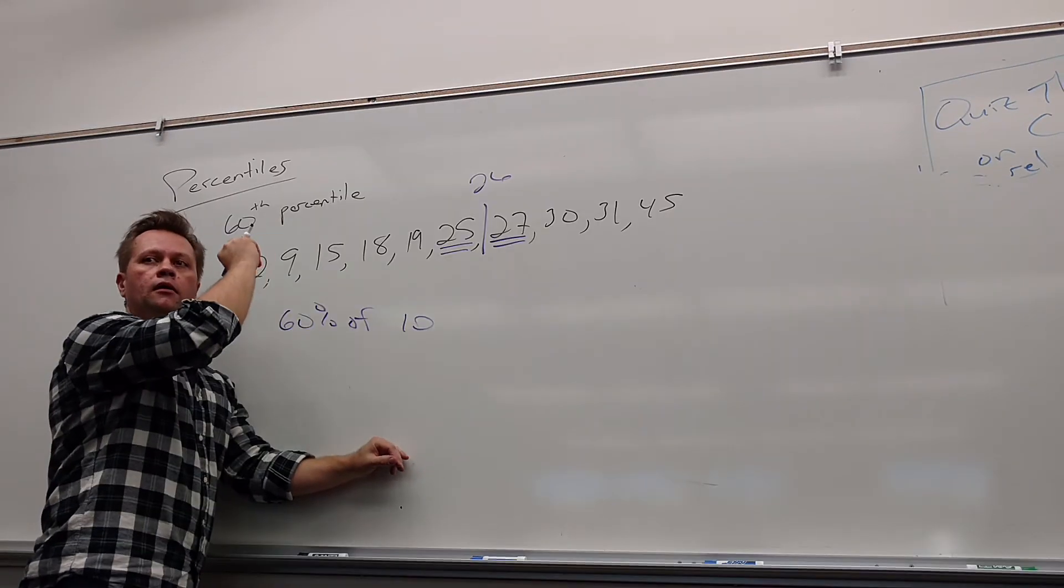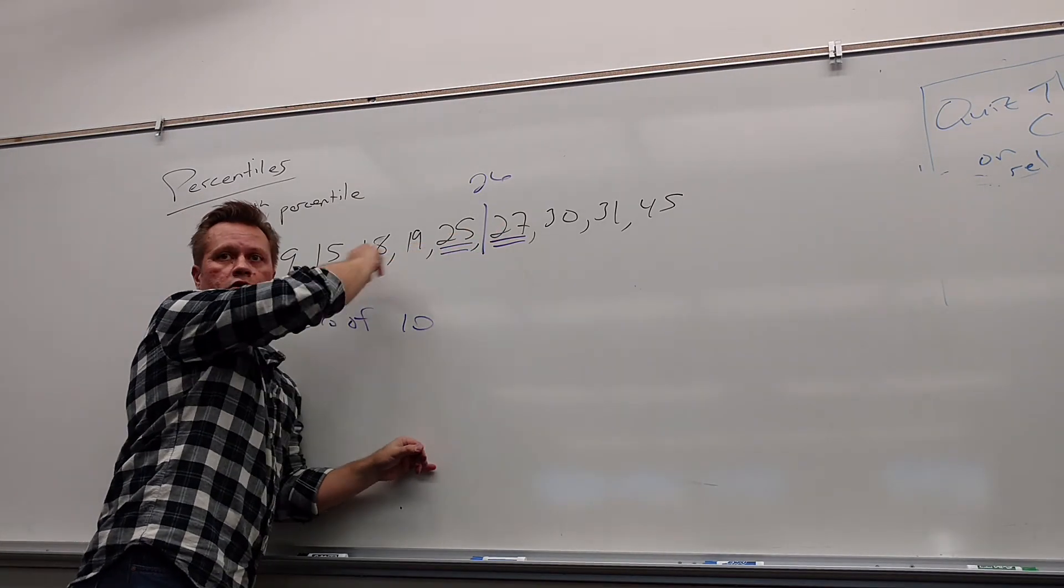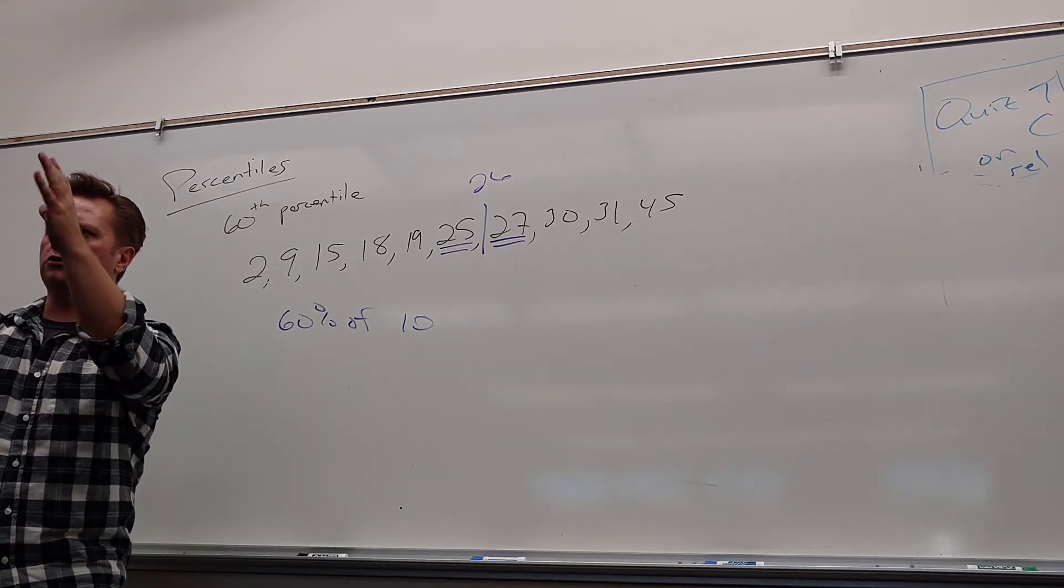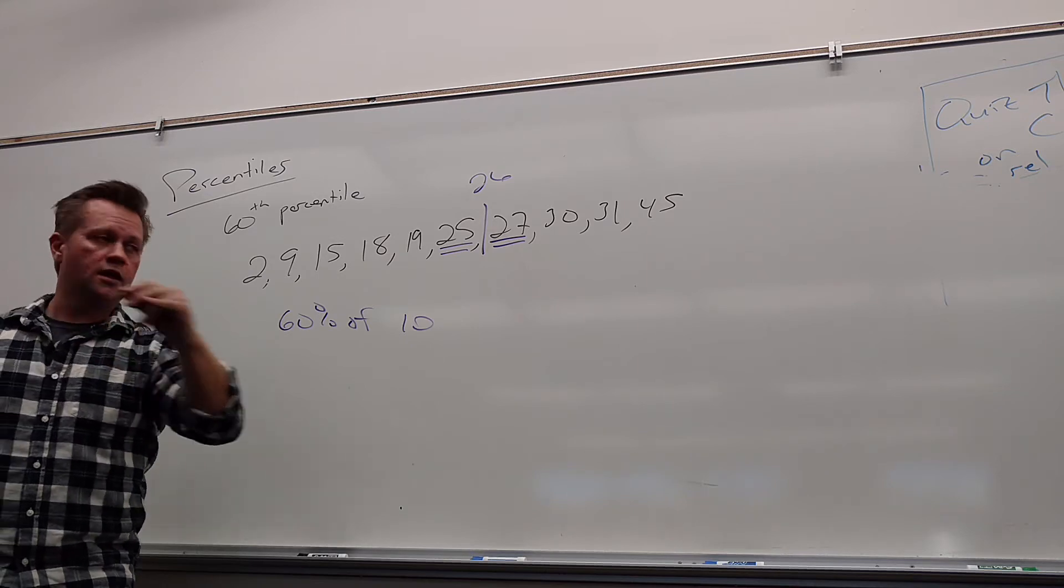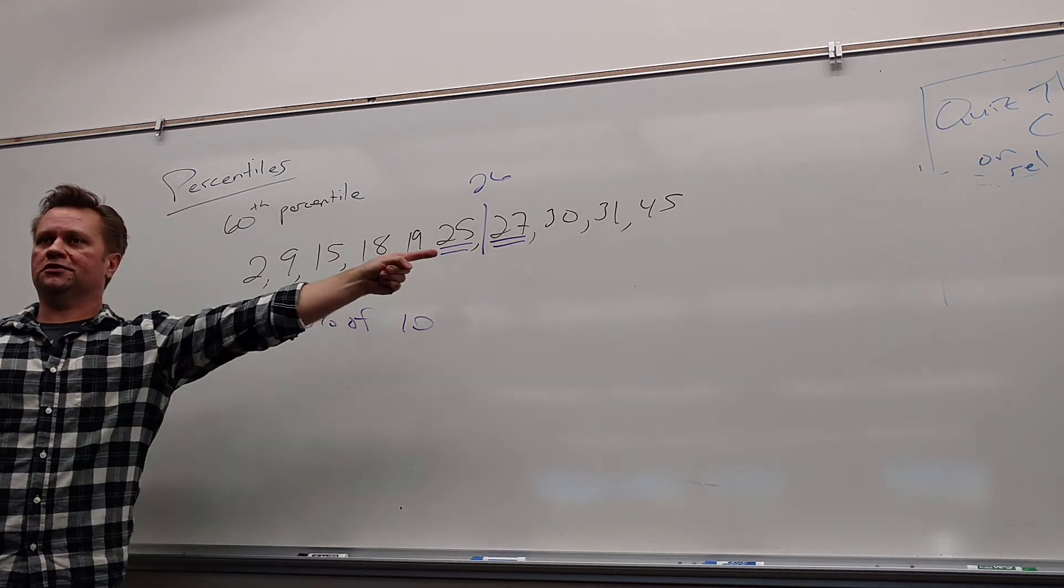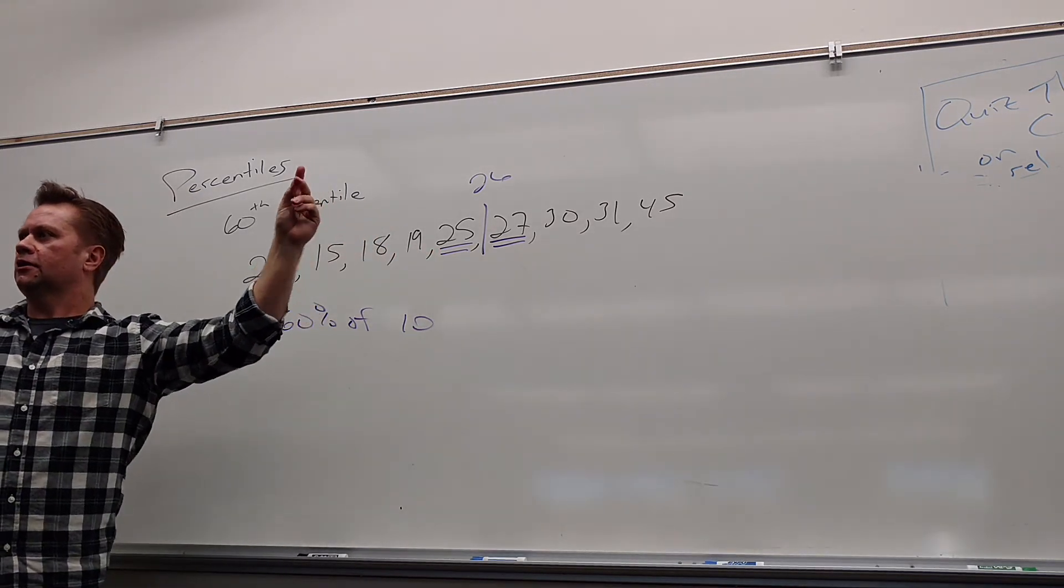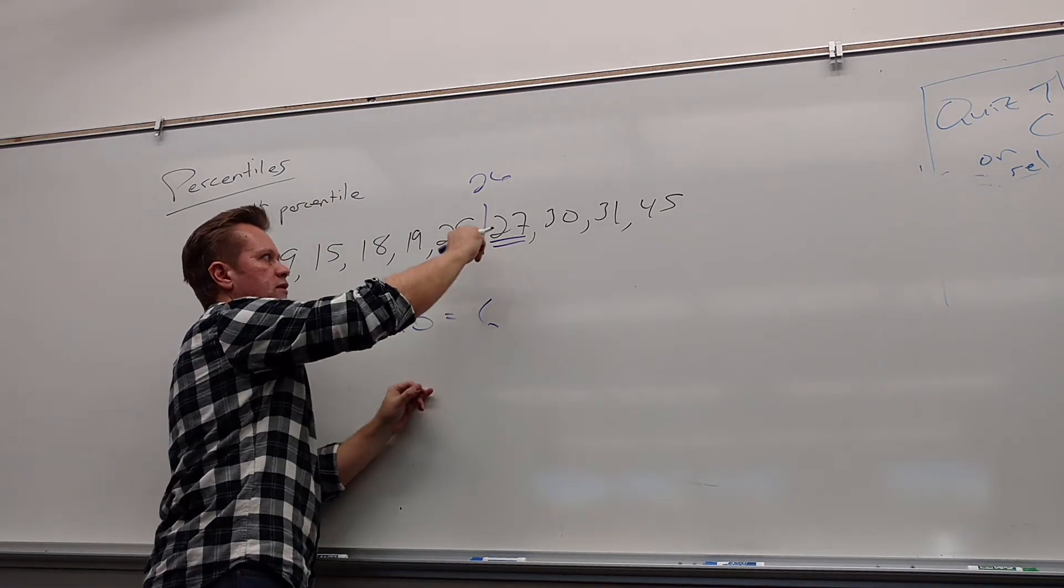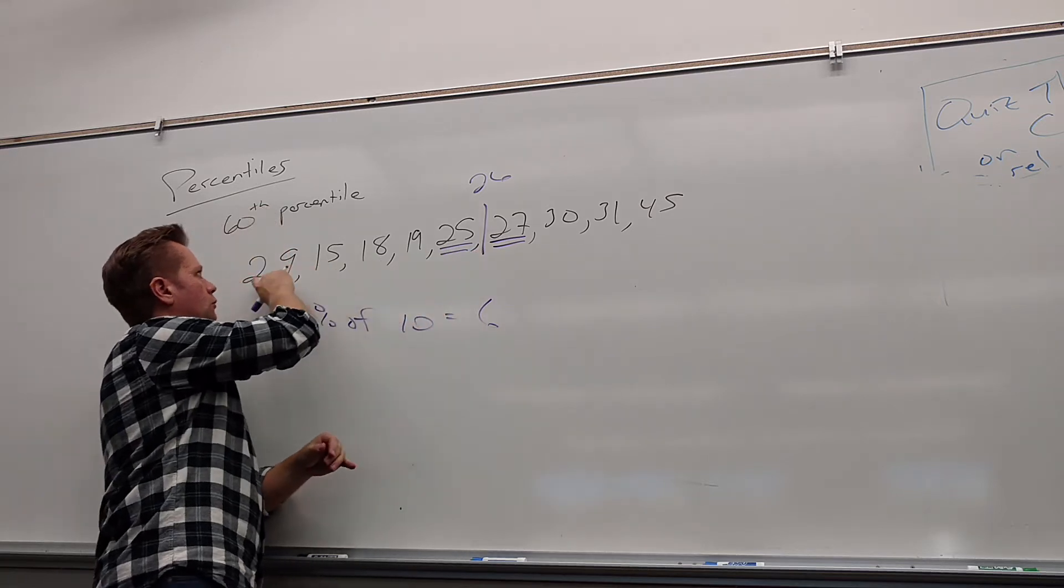So why does it make some sense to start here? Because if I want to find a number that has 60% below it, I'm going to go 60% of the way in. Doesn't that make some sense? Right? If you've got 10 people standing in a row, which person has 60%? I'm going to go 60% of the way in to this group of people, right? All right, maybe, maybe, maybe. So what's 60% of 10? Where did 10 come from?